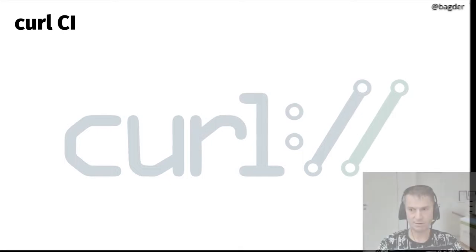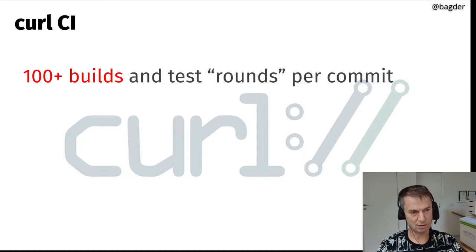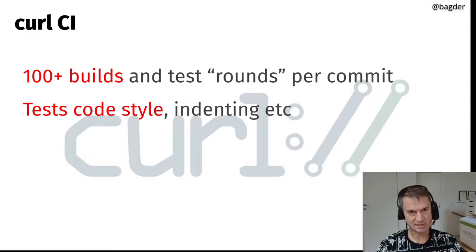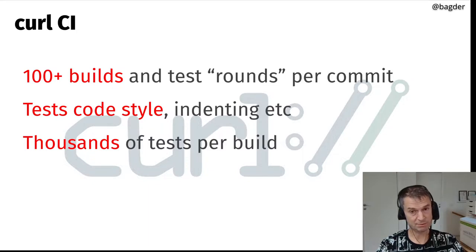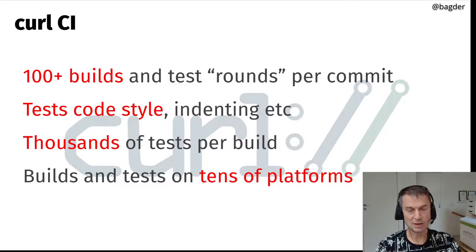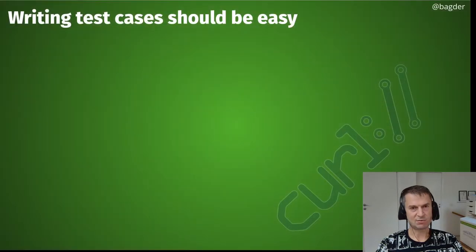To help us avoid mistakes — and sort of deprive security researchers of their bug bounties — we have a CI system. We have more than 110 CI jobs now per commit and pull request. All these CIs test code style, indenting, and make sure that we write the code correctly. It catches most obvious breakage of code style, and we have thousands of tests per build.